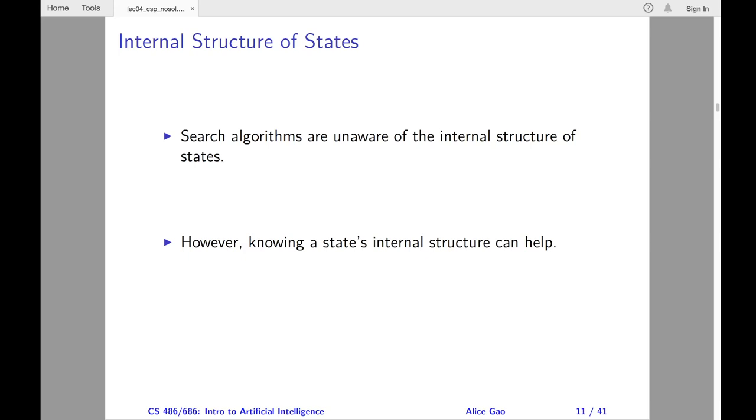Unfortunately, backtracking search does not know this. It only knows that this state is not a goal. So it needs to explore the entire subtree starting from this state, to realize that this partial state does not lead to a solution.